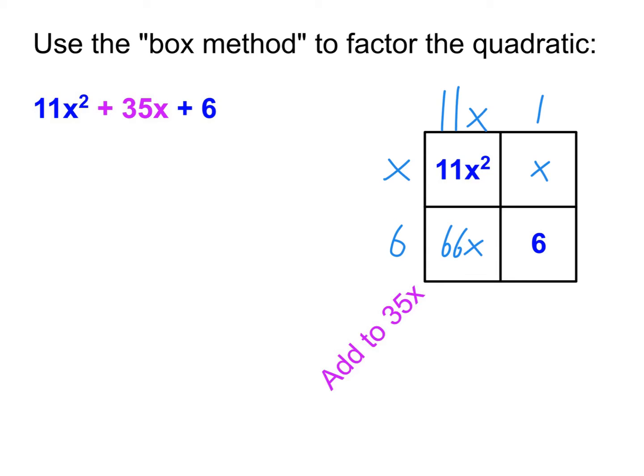Since 6 and 1 did not work, now we're going to go over to 2 and 3. So let's try 2 and 3 now. So x times 3 will give me 3x. 11x times 2 will give me 22x. 22x plus 3x is 25x. Still not what I wanted. So have you figured out now what we do next? I'm going to switch them. That's right.